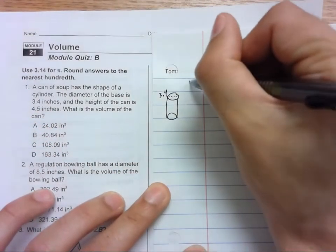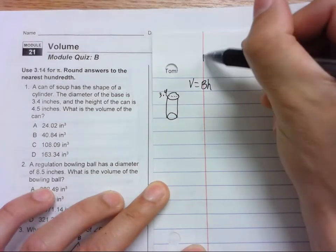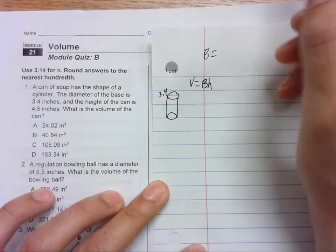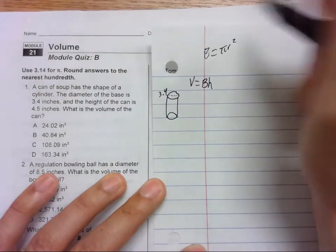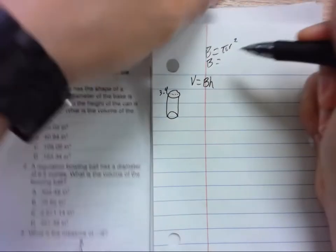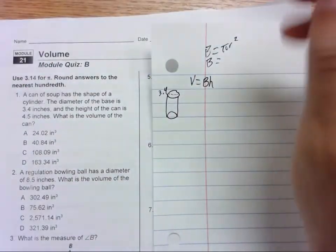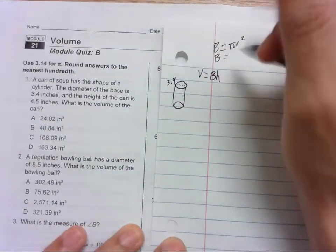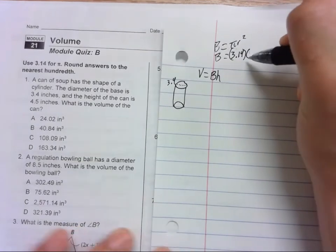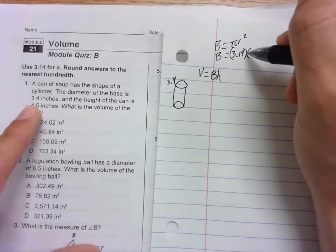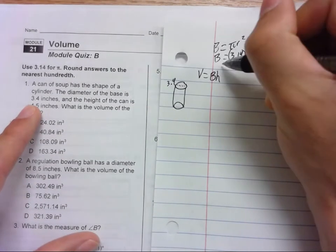We start with our formula: volume equals area of the base times the height. The area of the base is a circle, so it's pi times radius squared. The area of the base is 3.14. The radius, well if the diameter is 3.4, we need to half that for the radius, so it'd be 1.7 squared.